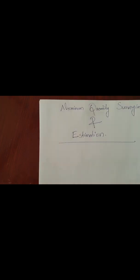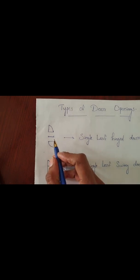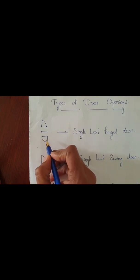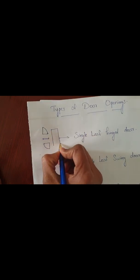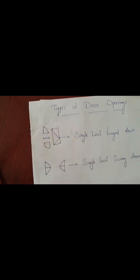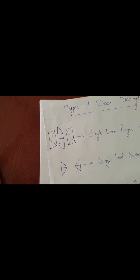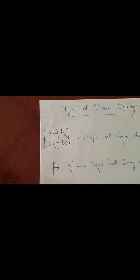First, we will explain about some types of openings and how you can recognize them from a plan. This is a single leaf hinged door — it is shown in the plan like this, and in elevation we can see it like this. In aluminum, hinged or swing doors come as single leaf hinged doors and double leaf hinged doors. In doors, two types are coming: aluminum door — meaning it's a sandwich paneled door — and a glazed door, where glass is coming in the shutter.